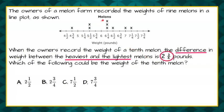So as it stands right now, we have nine melons. When we take one of these four choices, that's going to be our tenth melon. And the difference between the heaviest and the lightest needs to be two and three-fourths pounds.